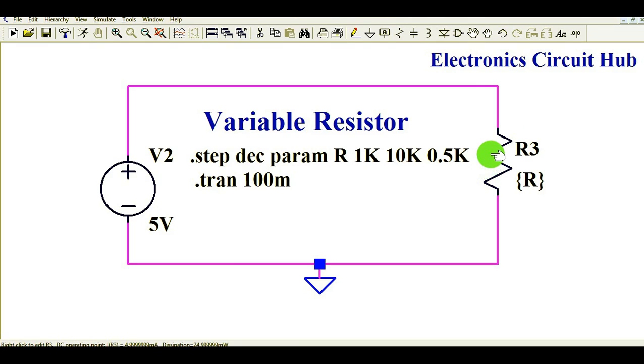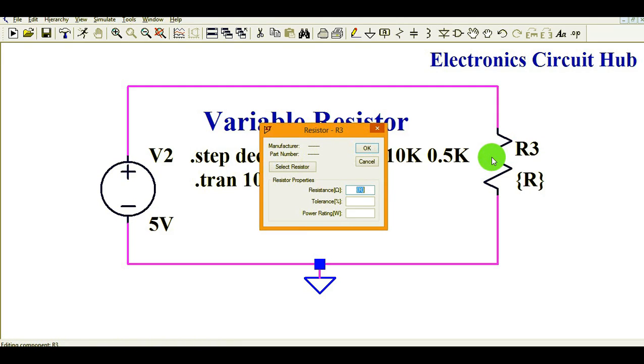So let me define the variable resistance R3. What you need to do is, in place of resistance value, you have to define the resistance R. You have to use braces.